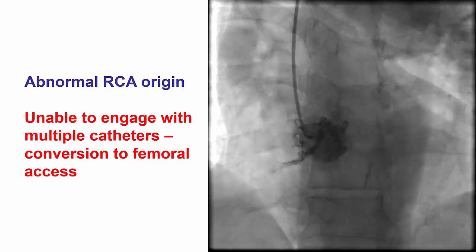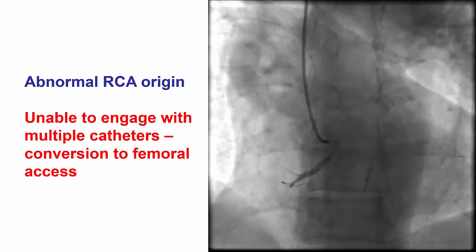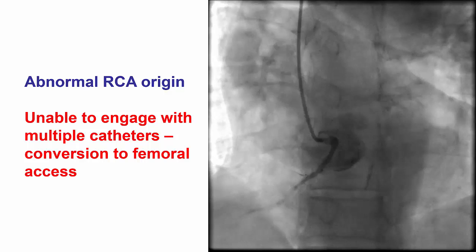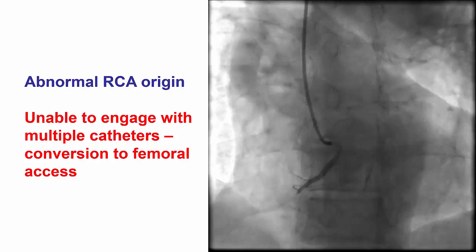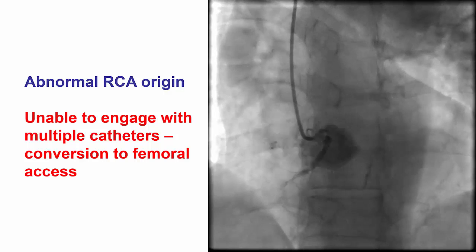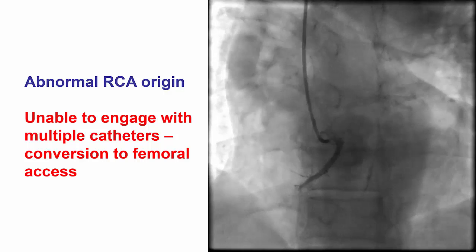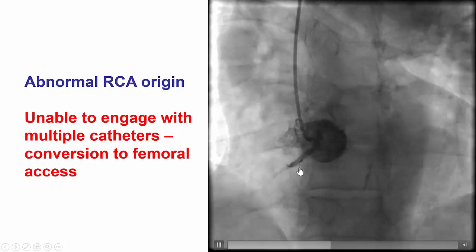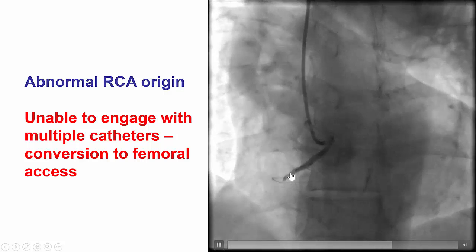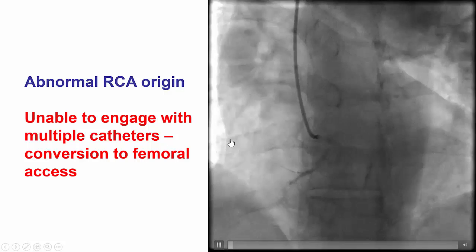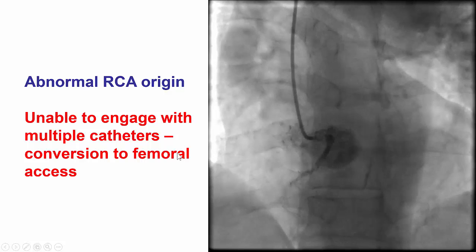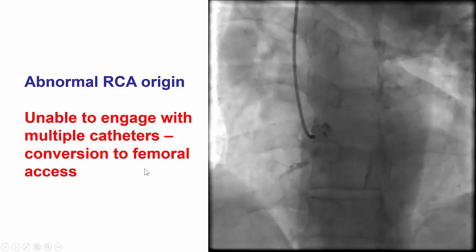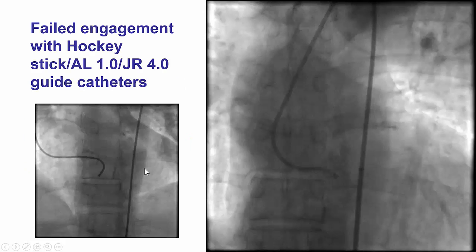But then we had significant difficulty engaging the right coronary artery. After multiple attempts, we were able to see that the RCA had an anomalous anterior takeoff, anterior and inferior, but then we tried several guide catheters to engage it and we were unable to.